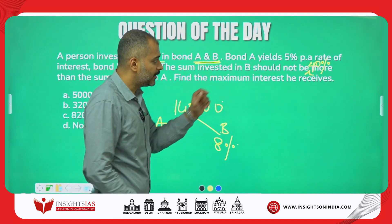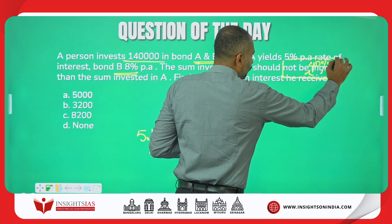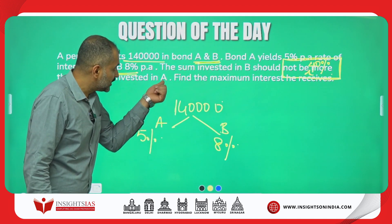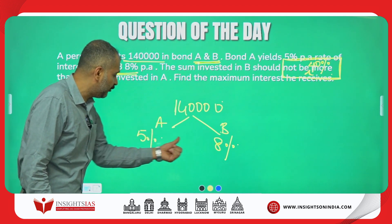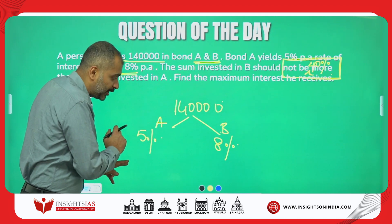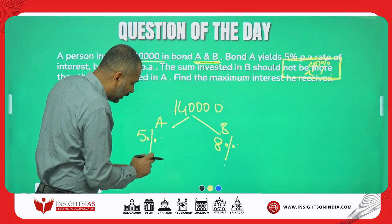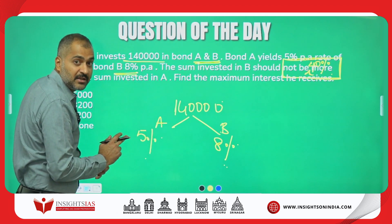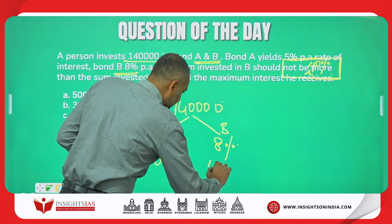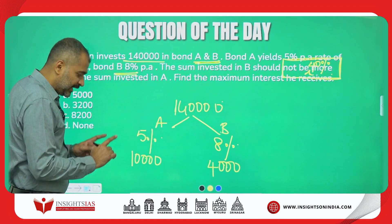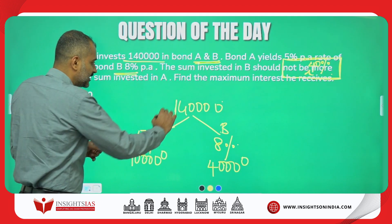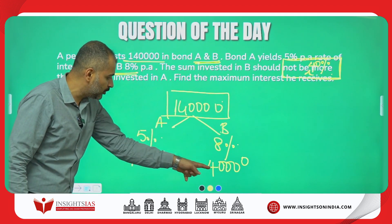The sum invested in B should not be more than 40% more than the sum invested in A. That means whatever you invest in B cannot exceed 40% more than the investment in A. For example, if you invest ₹100 in A, the max you can invest in B is ₹40. If ₹1,000 in A, max in B is ₹400. If ₹1,00,000 in A, maximum in B is ₹40,000. That is why the total is ₹1,40,000.